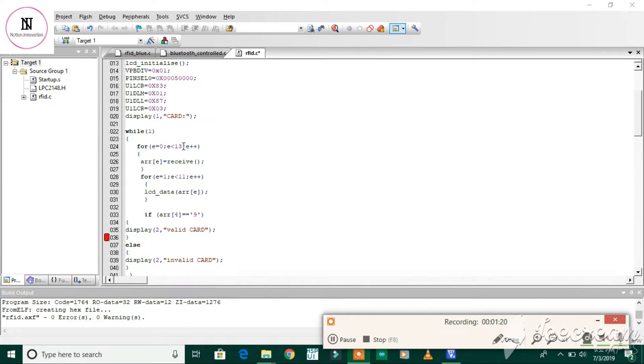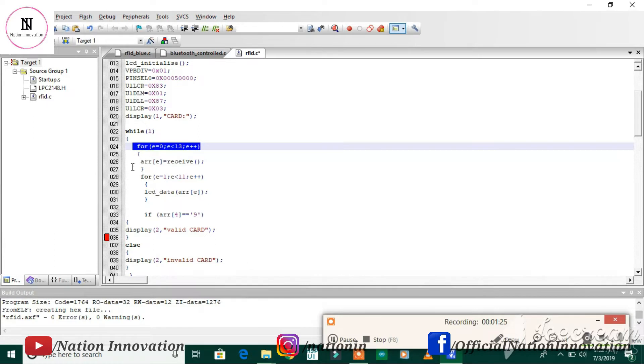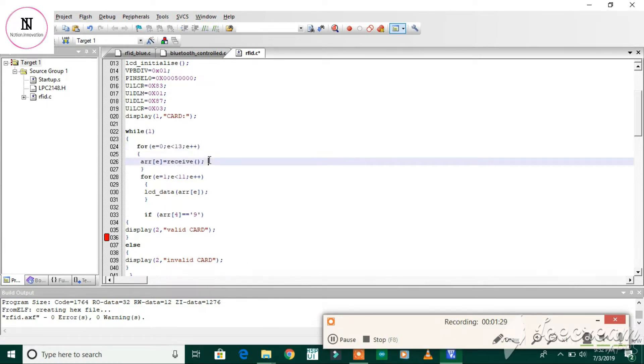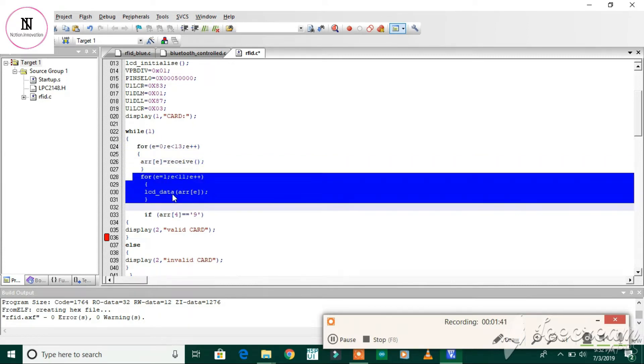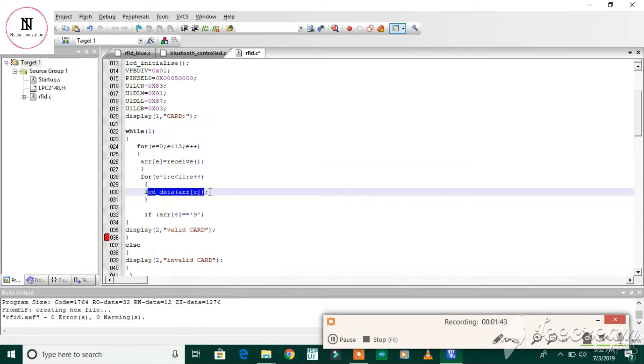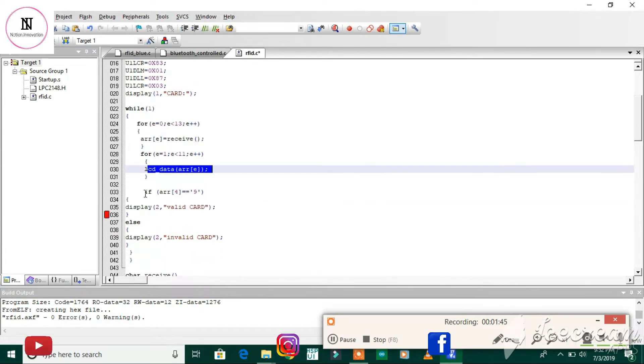We are taking the for loop of 13 and passing it to the UART receive function. Using this for loop, we are printing the card number on the LCD display. We have put a condition here: